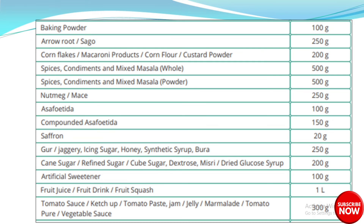Baking powder 100 g; Arrowroot 250 g; Corn flakes/macaroni products 200 g; Spices, condiments and mixed masala 500 g; Nutmeg 250 g; Asafoetida 100 g; Compounded asafoetida 150 g; Saffron 20 g; Jaggery/icing sugar/honey/synthetic syrup 250 g; Cane sugar/refined sugar 200 g; Artificial sweetener 100 g; Fruit juice/fruit drink/fruit squash 1 L.